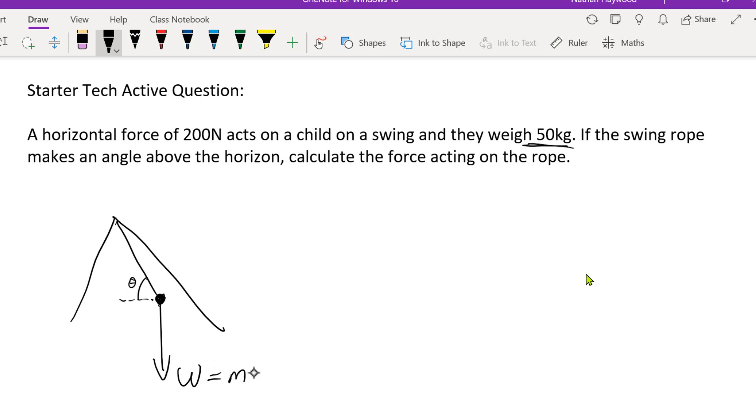It's the mass times acceleration due to gravity, which is very good. So that's force acting down the negative j direction. The swing rope - oh, there's also, sorry, I completely skipped this bit - it's also a horizontal force acting.